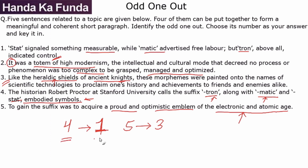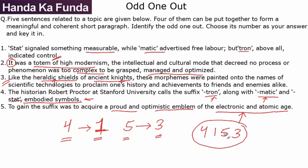So the topic of suffixes is introduced in sentence four, its explanation is given in sentence one, its impact is discussed in sentence five, and an older example of that impact is given in sentence three. The logical paragraph formed here is 4-1-5-3. But that is not what we were asked — we were asked which is the odd one out. The odd one out here is sentence number two, and that is our answer. Hope you learned something about odd one out from this video.